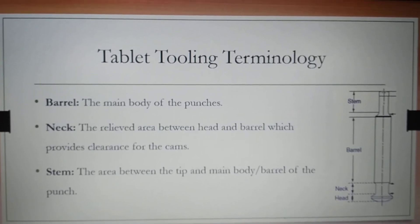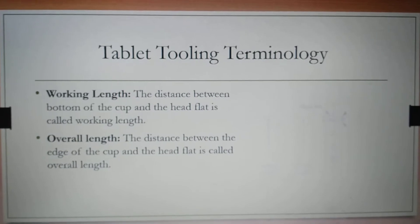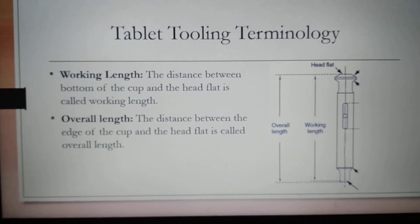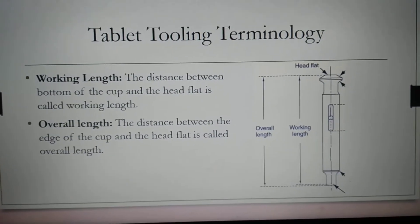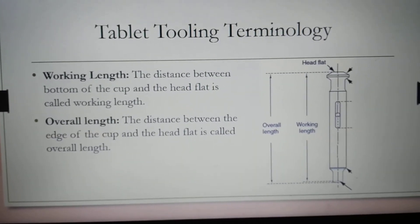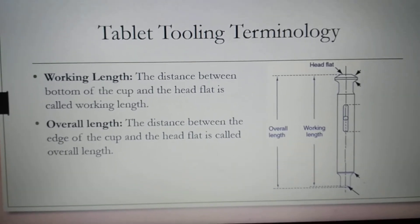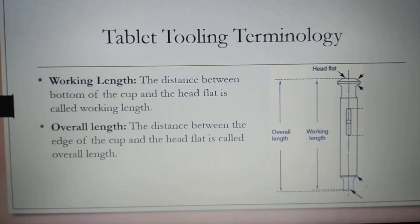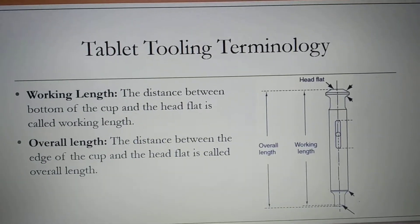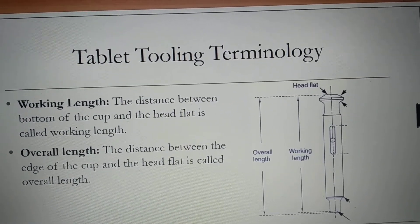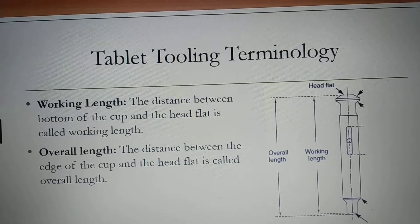As you can see in the diagram, the next one is working length — the distance between the bottom of the cup and the head flat is called working length. Whereas the overall length is the distance between the edge of the cup and the head flat, as you can see in the diagram. Working length is always smaller than the overall length of the punches.